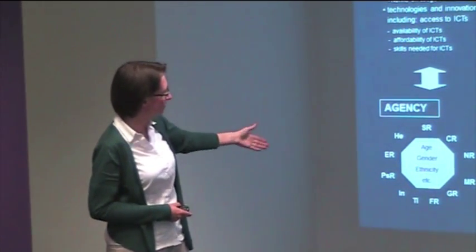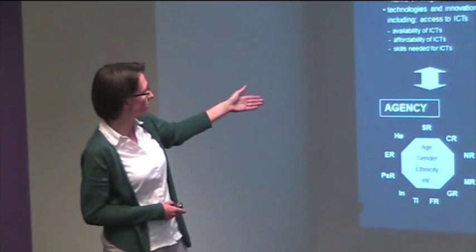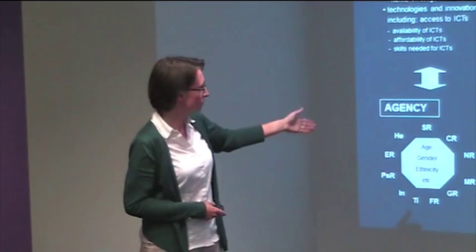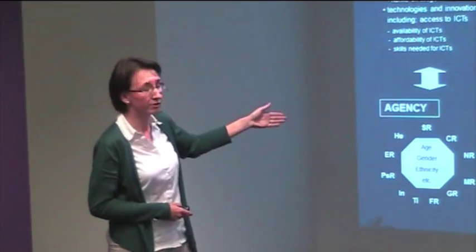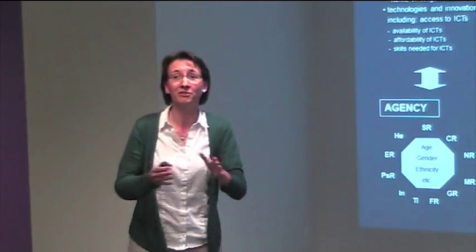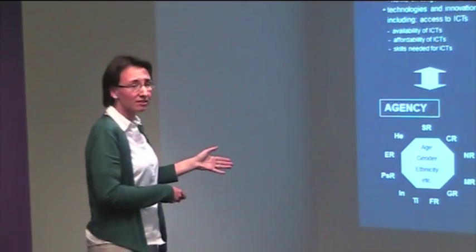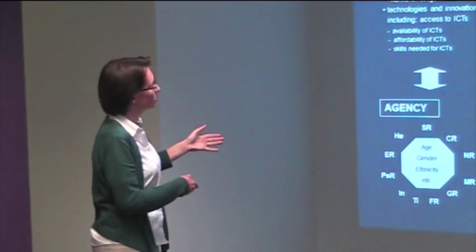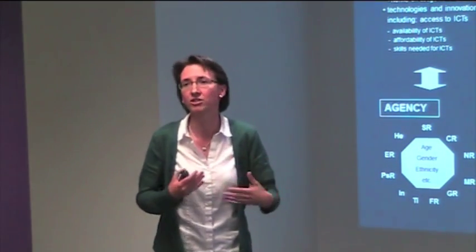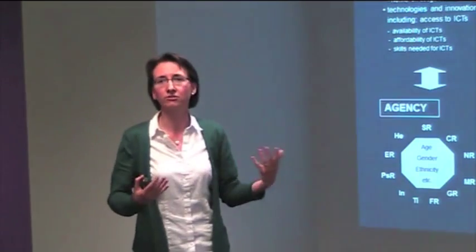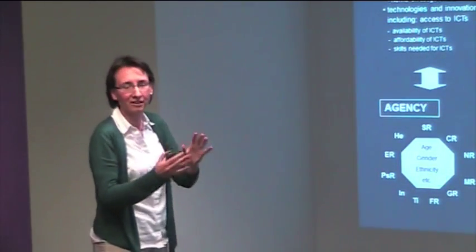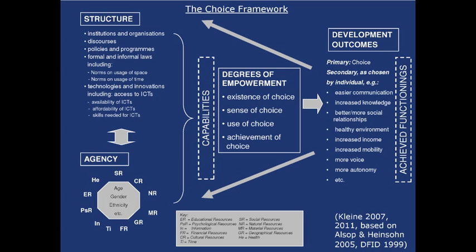All the definitions are in the book. You have an individual with these particular resources navigating the social structures they find themselves in. I use Giddens' Structuration Theory to make sense of how agency and structure are connected. In practical terms, individuals need to operate in whatever social context they are embedded in — that means institutions, discourses, policies and programs, formal and informal laws, and, particularly important for ICT4D, technology and innovations.